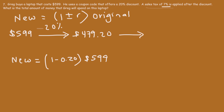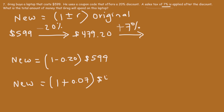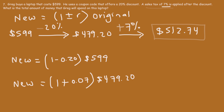From there, we add a 7% tax, so the price increases. The new price is (1 + R) × previous price: (1 + 0.07) × $479.20, which is 1.07 × $479.20, giving you the final answer of $512.74. That's another way to calculate the final price after a discount and sales tax are applied.